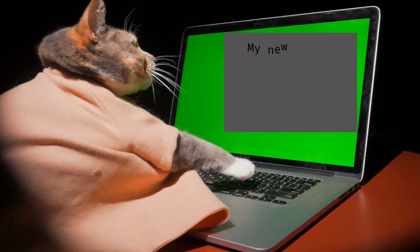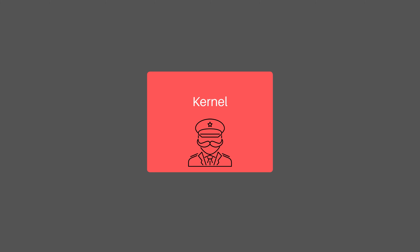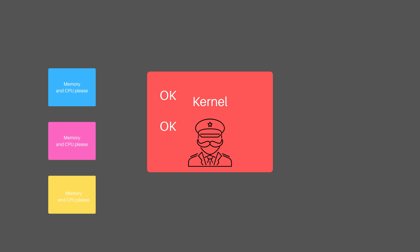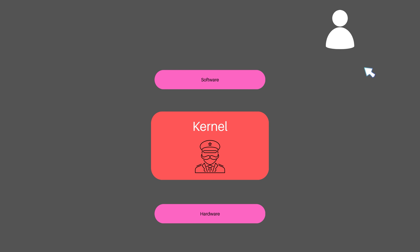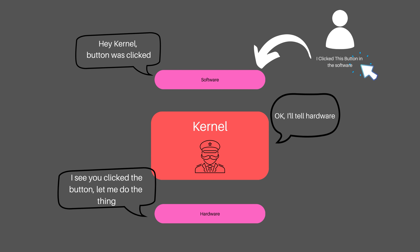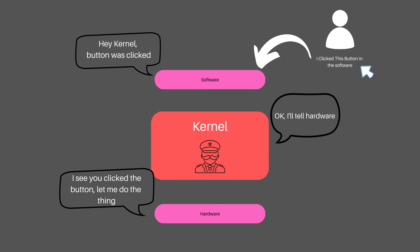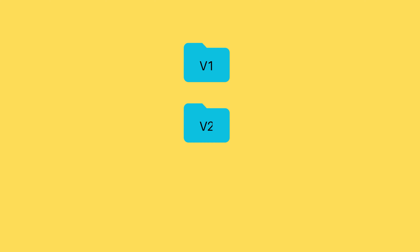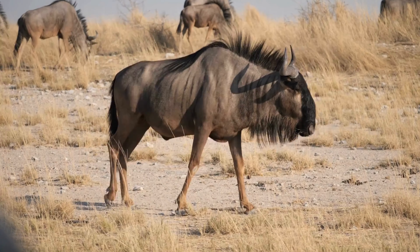Let's stop there — what's a kernel? The kernel in a computer is responsible for managing system resources and facilitating the communication between hardware and software. The first versions of Linux were not operating systems at all, but just a kernel.